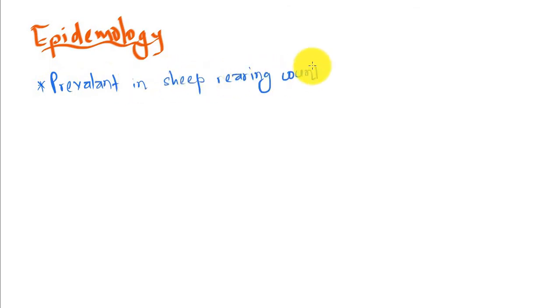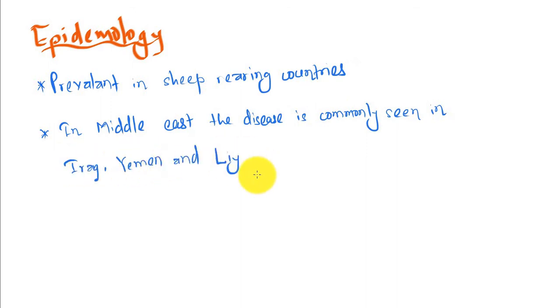Let's start with epidemiology. The disease is prevalent in sheep-rearing countries. Talking about the Middle East, it is commonly seen in Iraq, Oman, and Libya, but is sometimes also met within Egypt, where I am right now.